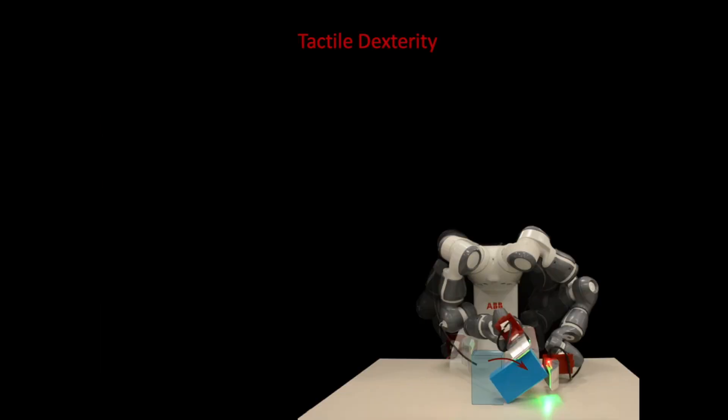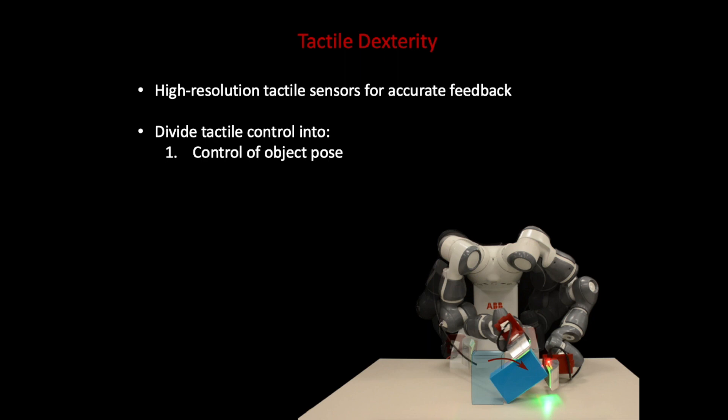This work presents an approach to robotic manipulation that focuses on the role of tactile feedback. The key ideas are to exploit high-resolution tactile sensors as a source of geometrically accurate feedback, to divide the role of tactile control into controlling the object pose and controlling the contact state, and to restrict the contact interactions to those that are efficient for tracking and controlling the object.